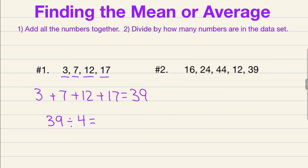39 divided by 4 gives us a mean or average of 9.75. You can get a decimal for your mean — your answer will not always be a nice clean whole number. You can most definitely get decimals as well for your answer.